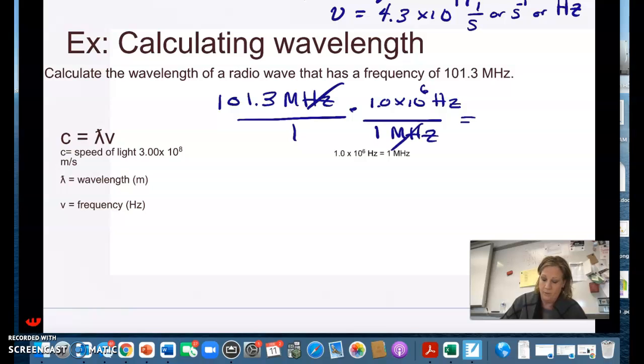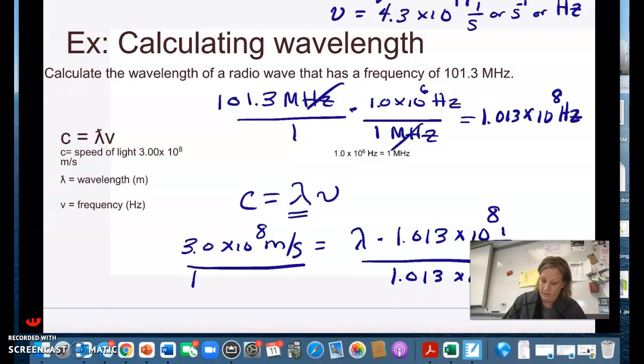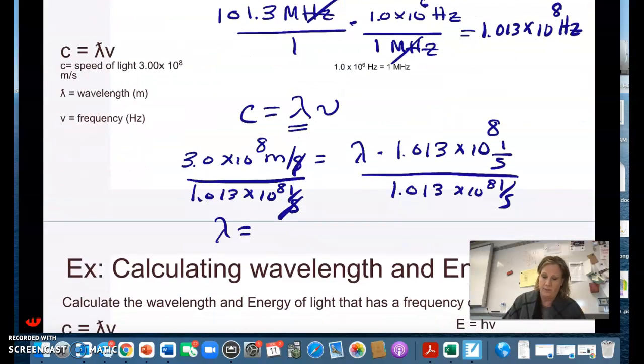So really we're talking about a frequency of 1.013 times 10 to the 8th hertz. So then I can use my equation. I know the speed of light and I'm going to solve for wavelength. So I would put my speed of light in equals wavelength times the frequency. And I'm going to write it as 1 over second because then you can see when I divide my seconds will cancel and I'm solving for wavelength so it's going to be in a distance unit and it's going to be in meter. So once I do this I should get 2.96 meters.